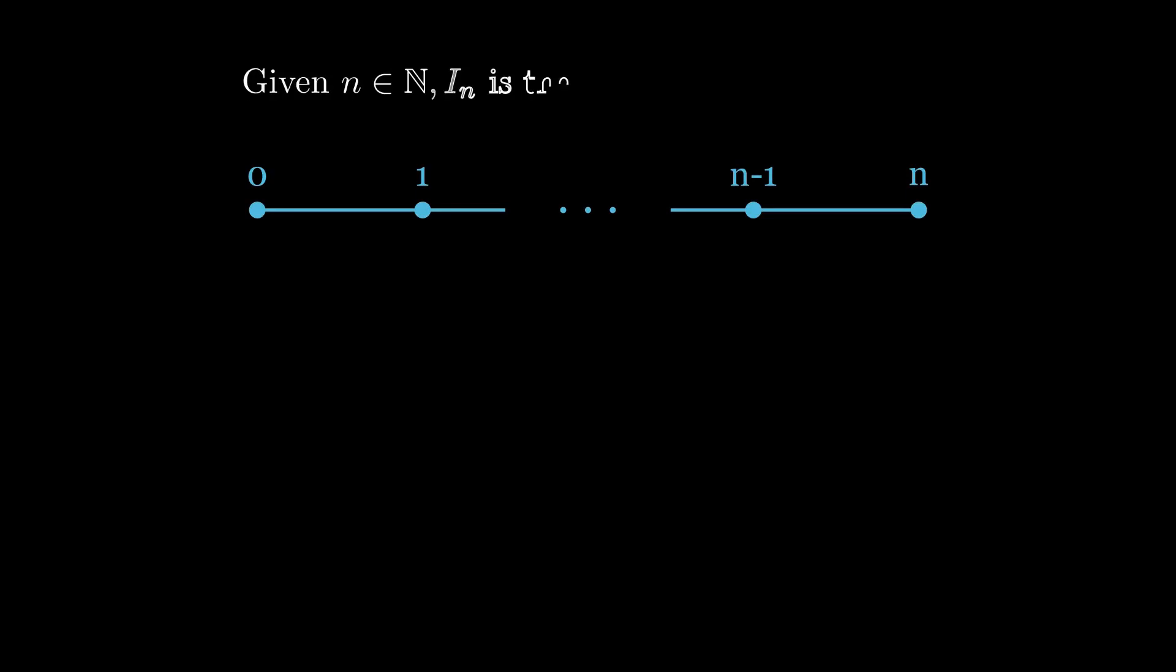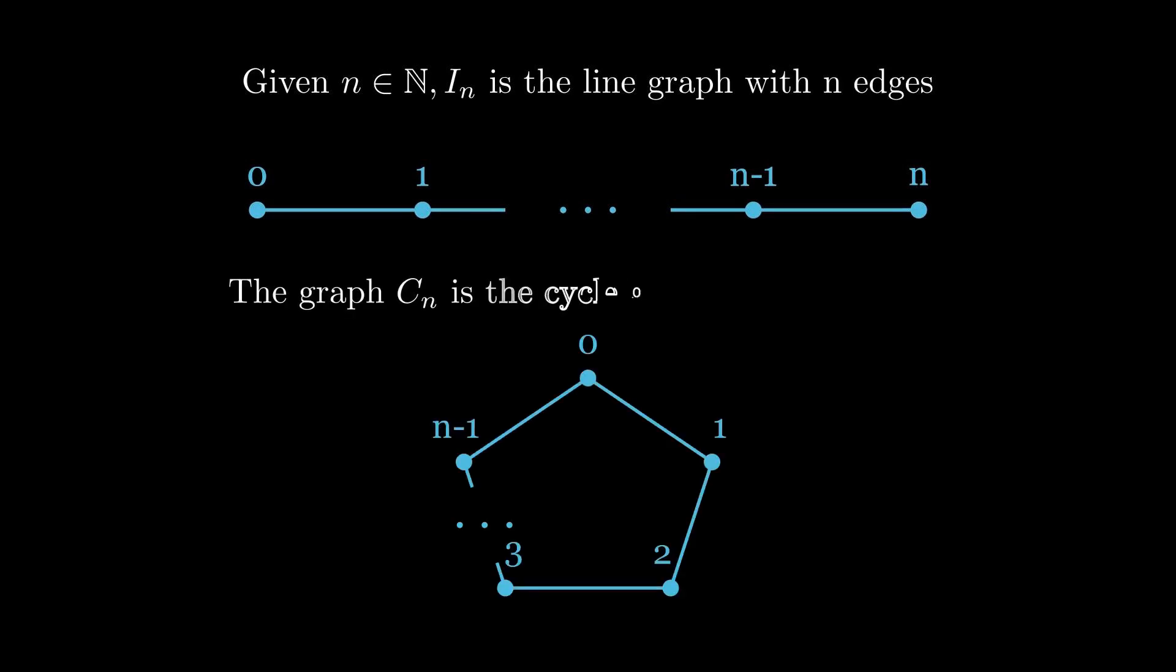Some important examples of graphs include the line graph on n edges. So this is n plus one vertices connected by n edges and it's denoted In. And another important graph is Cn, which is the cycle graph on n vertices. So it's n vertices connected in a cycle.